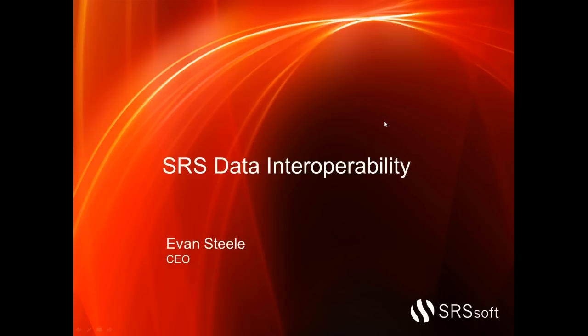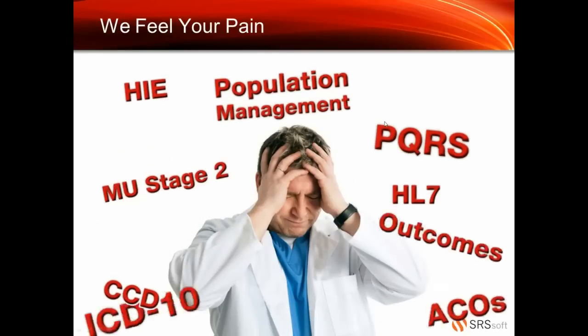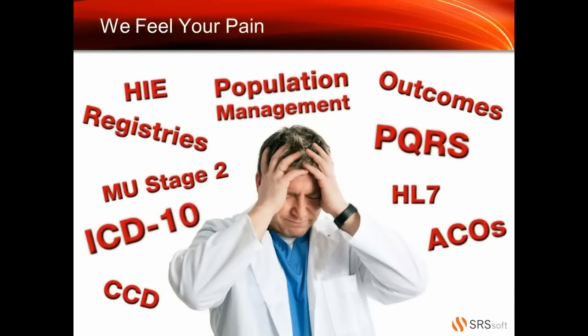Our goal today is to first feel your pain. When you look at this slide, we see all the different programs and acronyms flying around regarding data interoperability — HIEs, PQRS, ACOs, HL7, CCD, ICD-10. On top of that, we have Meaningful Use Stage 1 and now Stage 2 coming out in the next year. We have all sorts of programs run by the government and payers to measure quality and outcomes, and to do benchmarking and predictive analytics.